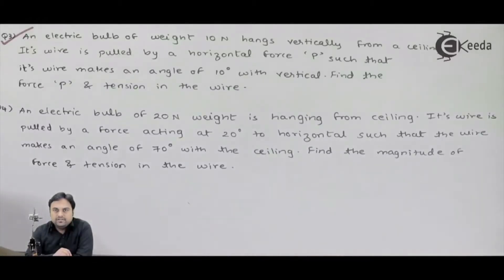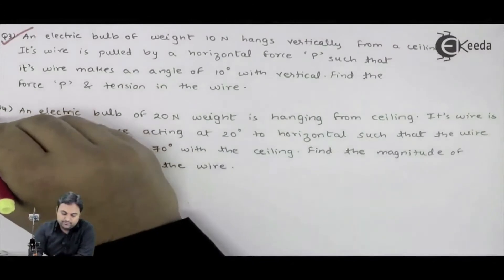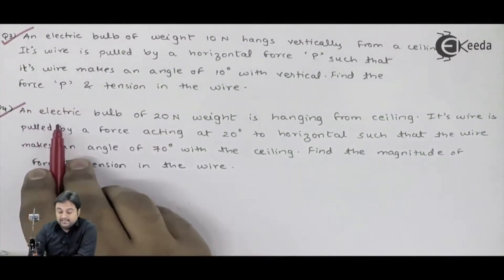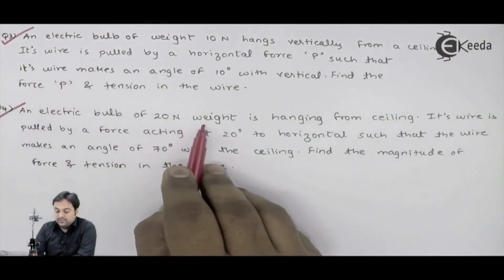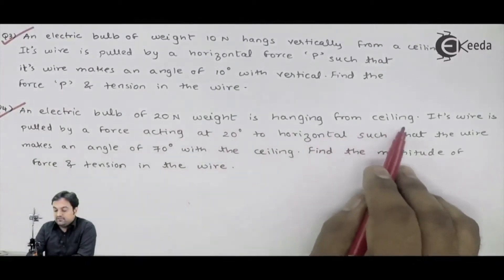Let us solve the next question, question number 4. What is given here? An electric bulb of 20 Newton weight is hanging from ceiling.